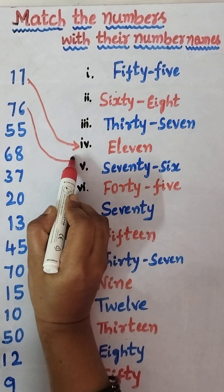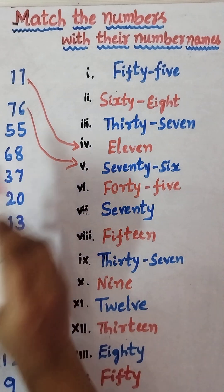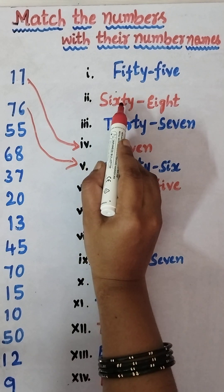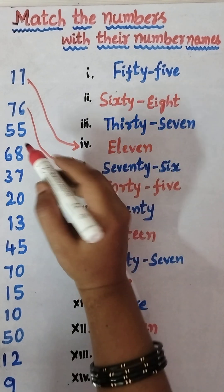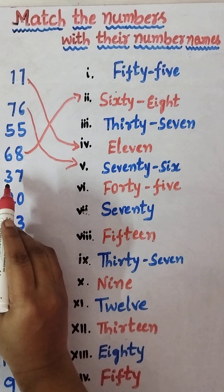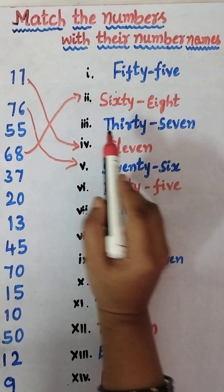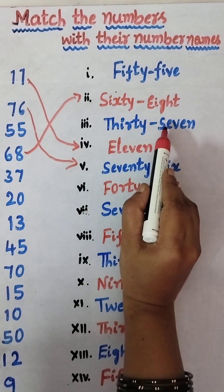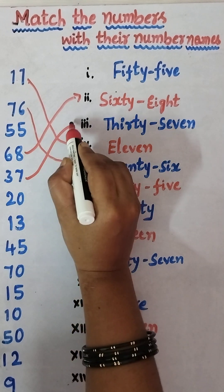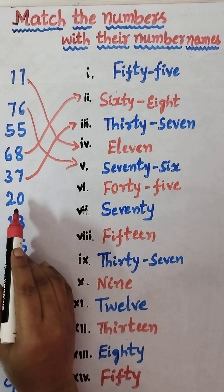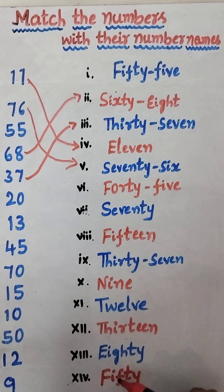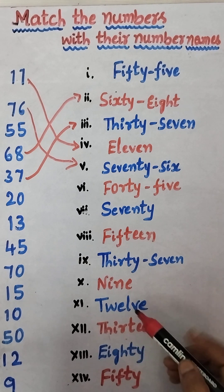Next, 68 — where do we match 68 from? Match it here. Next, 37 — where is 37? T-H-I-R-T-Y S-E-V-E-N, thirty-seven. So we match 37 here.